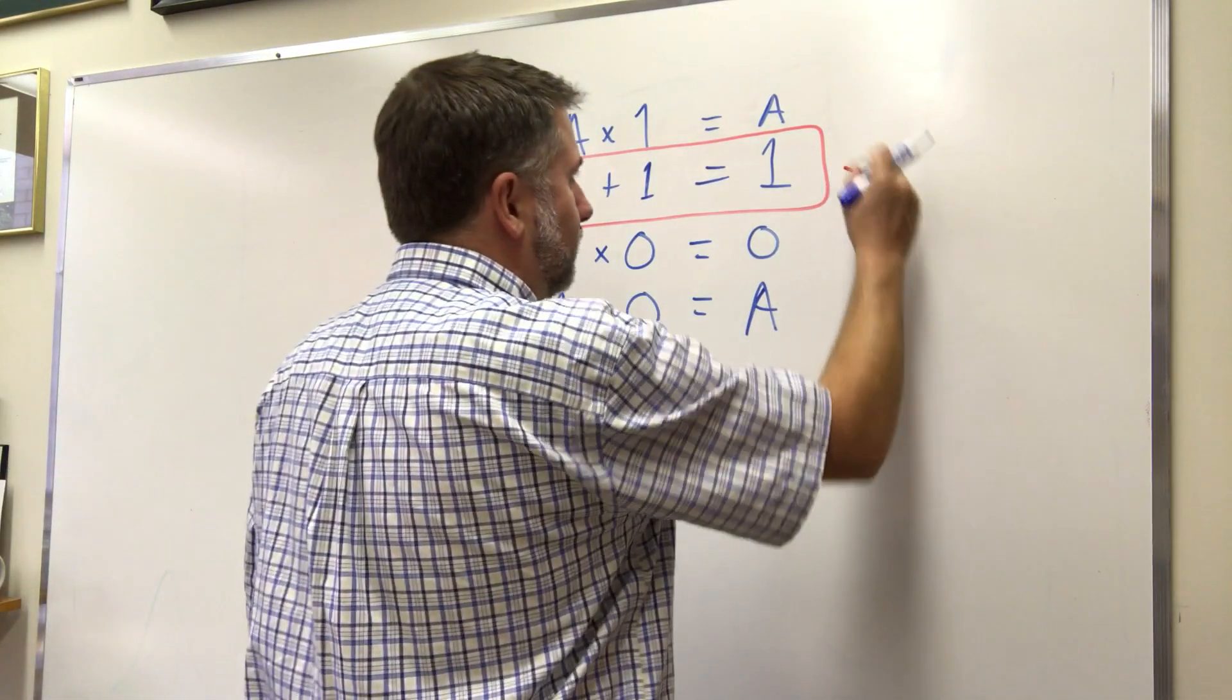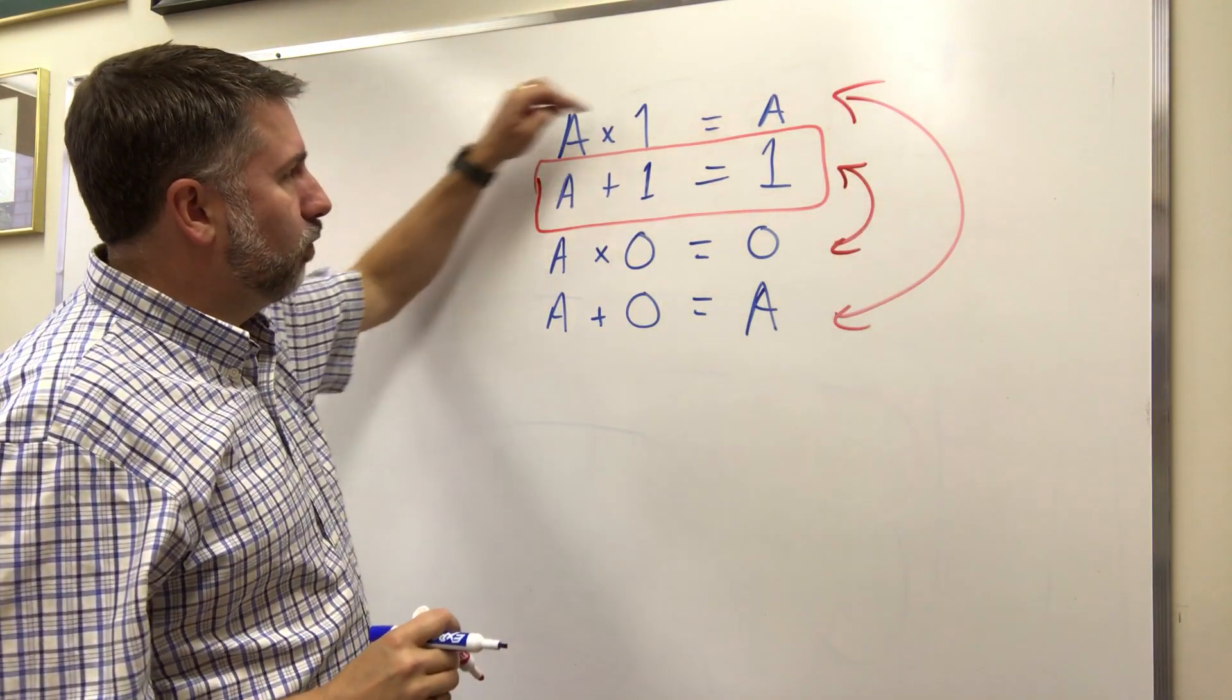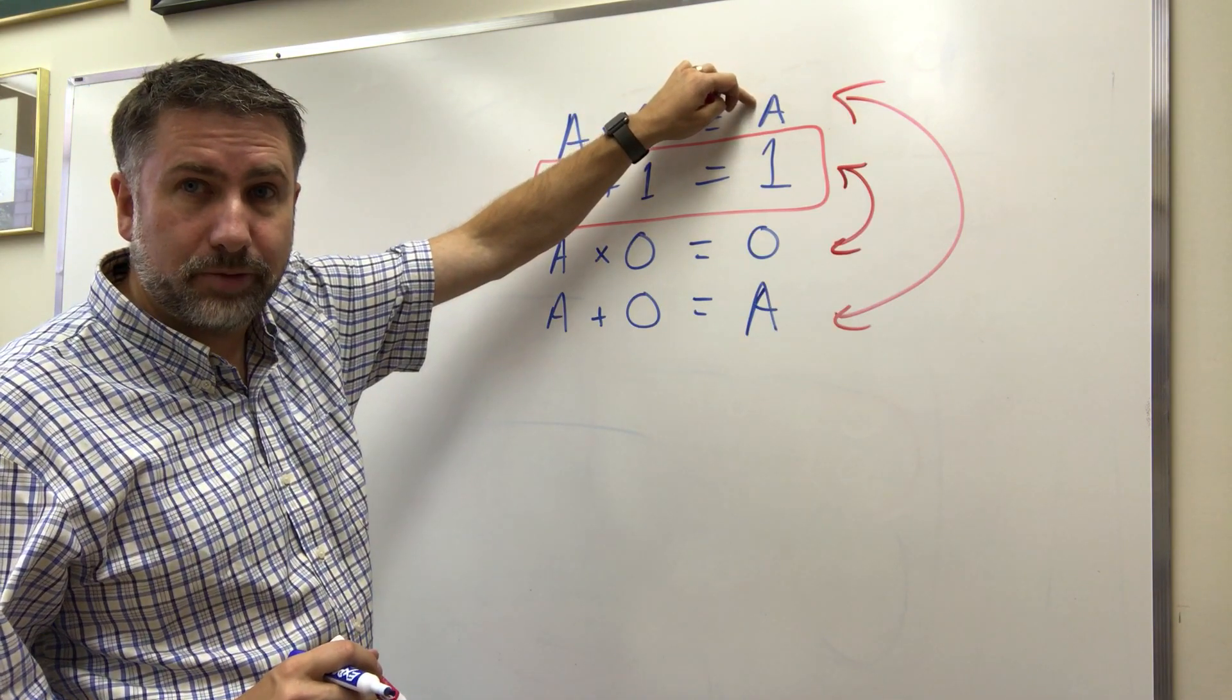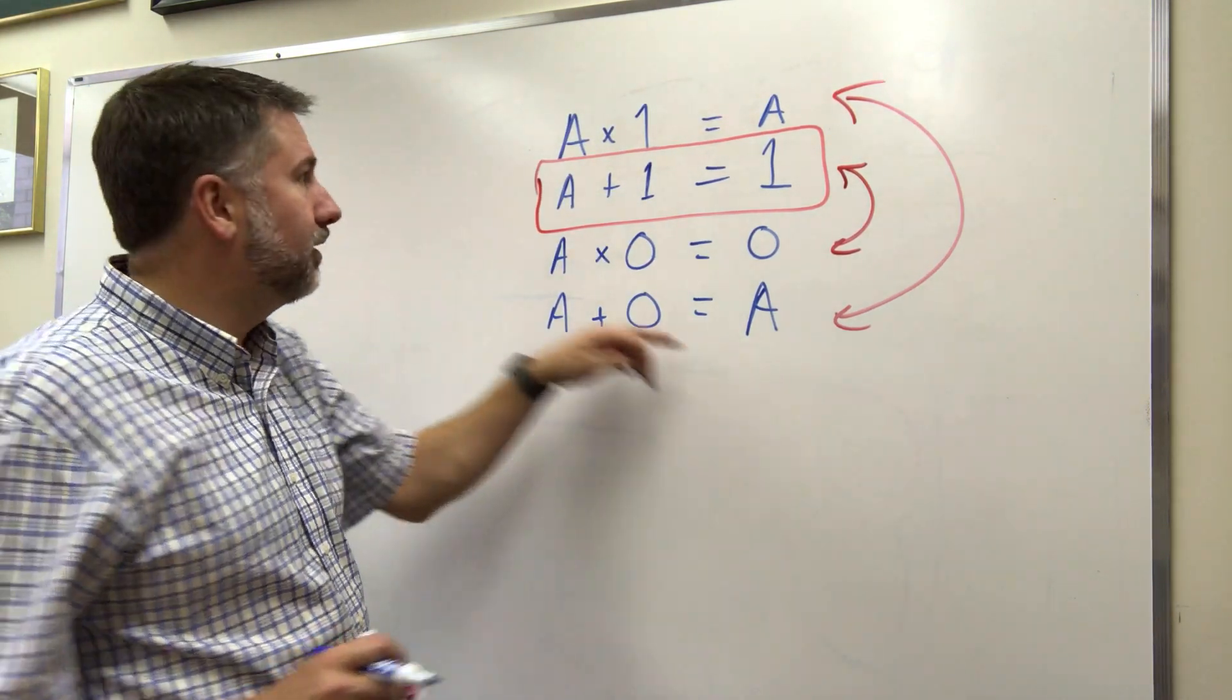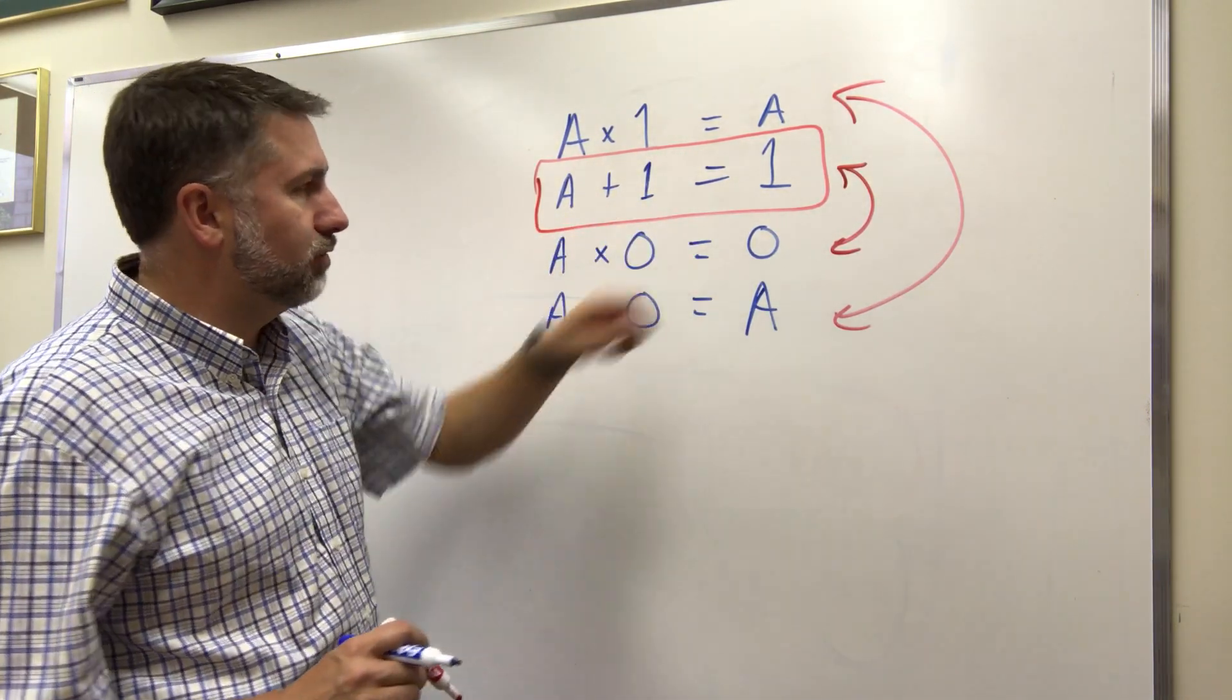But it's a dual of this one. These sort of go in pairs, you see? If you multiply by one, or if you AND with one, you get the initial variable back again. If you OR with zero, you get the initial variable back again. Here, if you OR with one, you get one. If you AND with zero, you get zero.